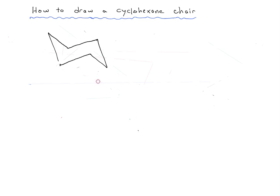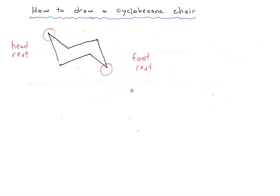Once you've done that, I like to just erase the guidelines on the parallelogram so we're left with the structure itself. Now we're going to identify in our cyclohexane chair diagram what the headrest is and what the footrest is. The reason it's called the cyclohexane chair is because the parallelogram part is kind of like the flat part of your chair, and each of the flaps represents the headrest and the footrest.